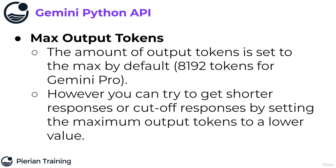The amount of output tokens is set to the absolute maximum that the model can produce by default. For Gemini Pro, it can only produce a maximum of 8192 tokens, and that's actually the default value. However, you could adjust this parameter in a generation configuration object to get shorter responses by setting the maximum output tokens to a lower value. Setting the maximum output tokens to a lower value in combination with a prompt asking for a shorter reply tends to work well.